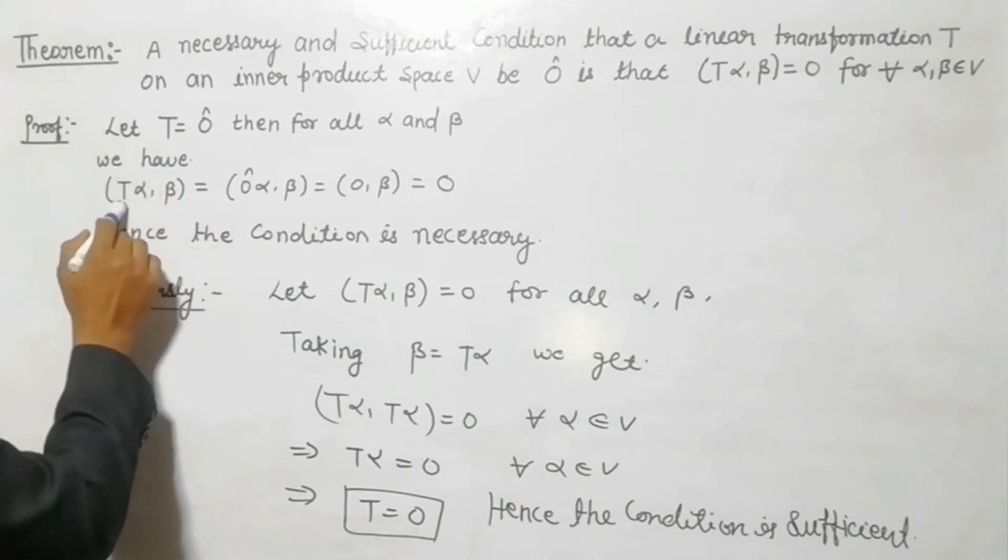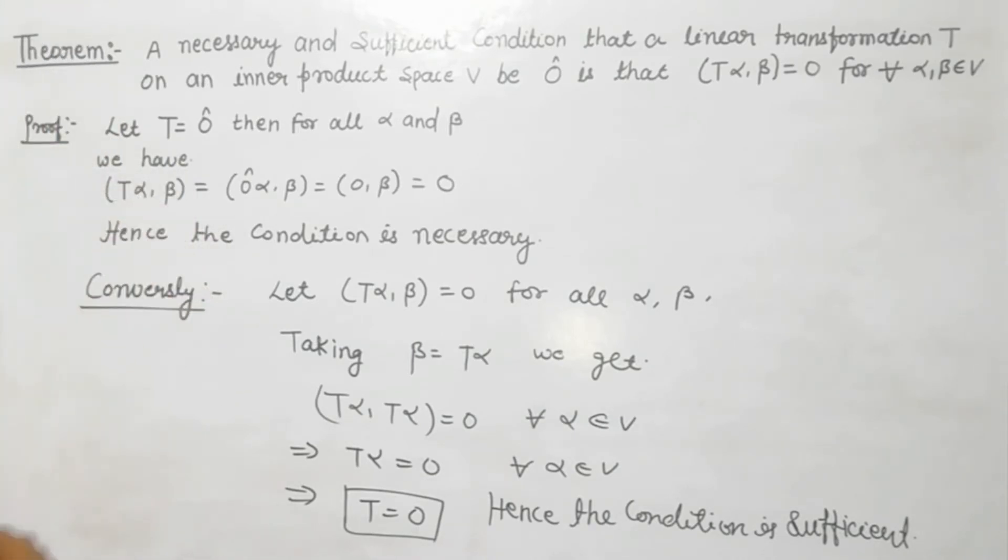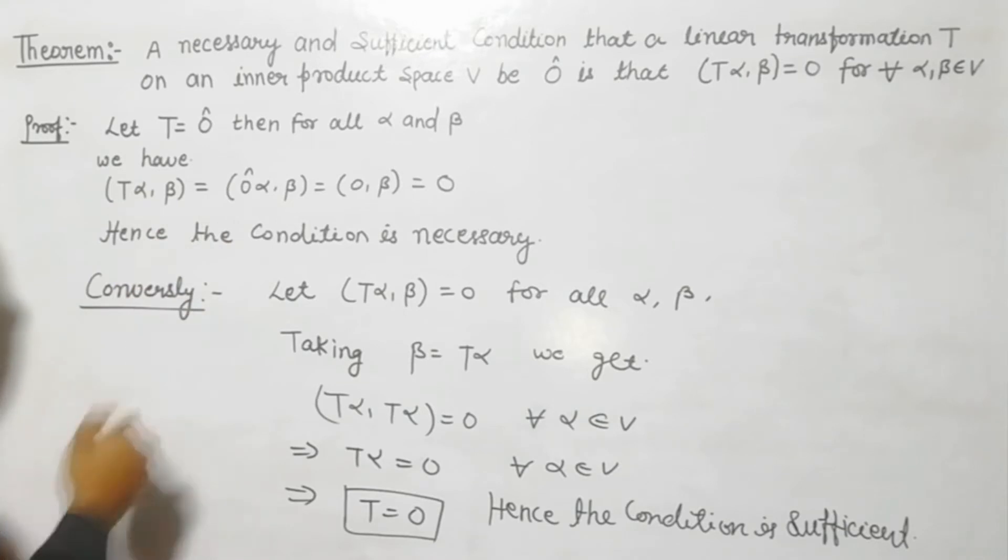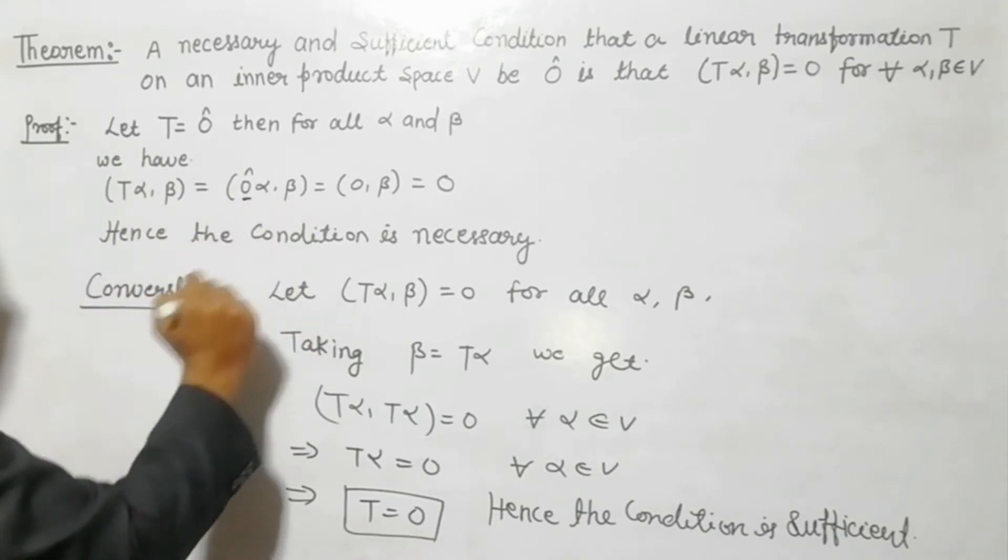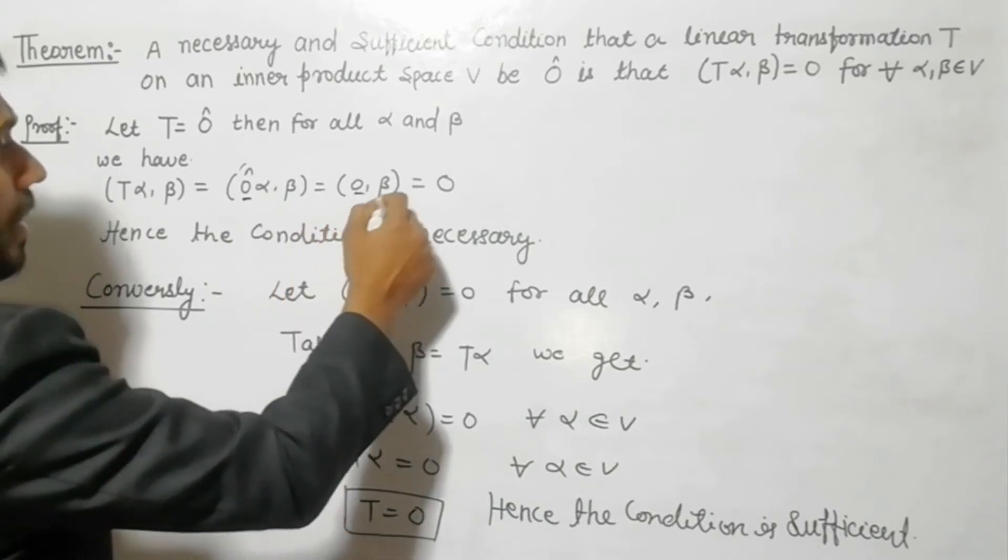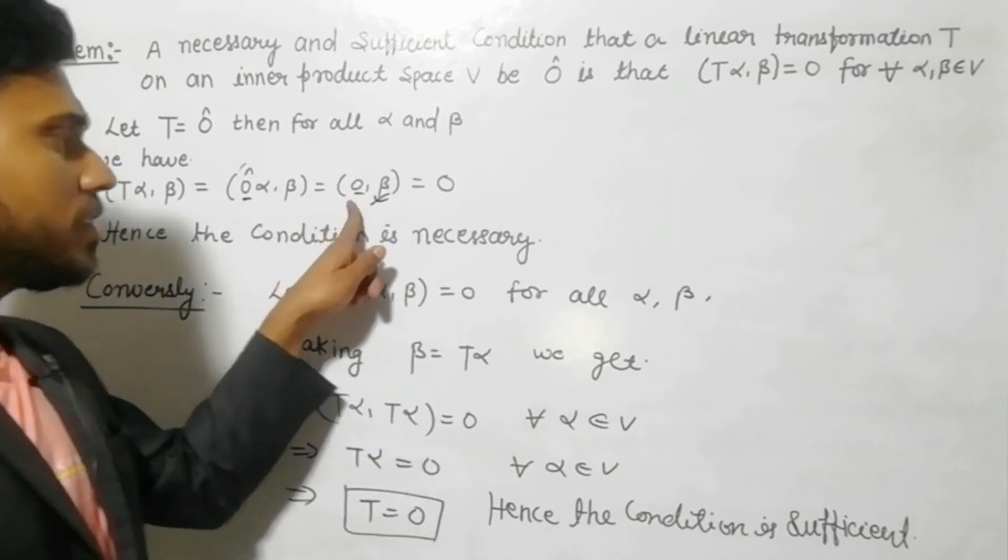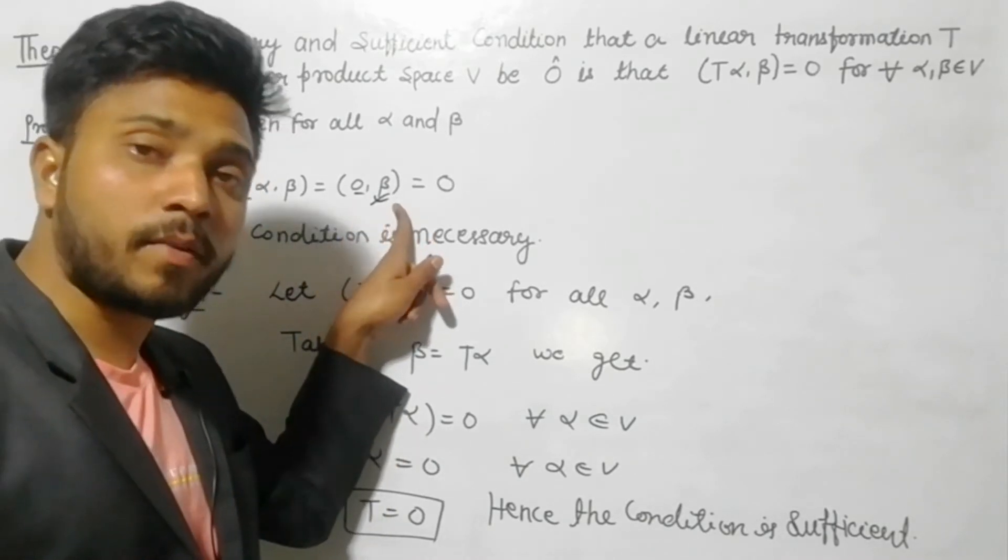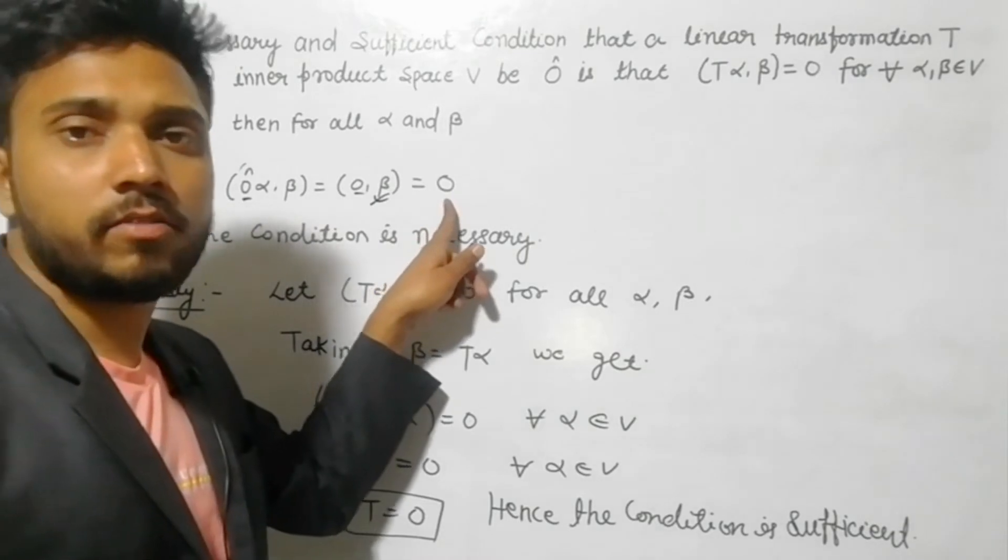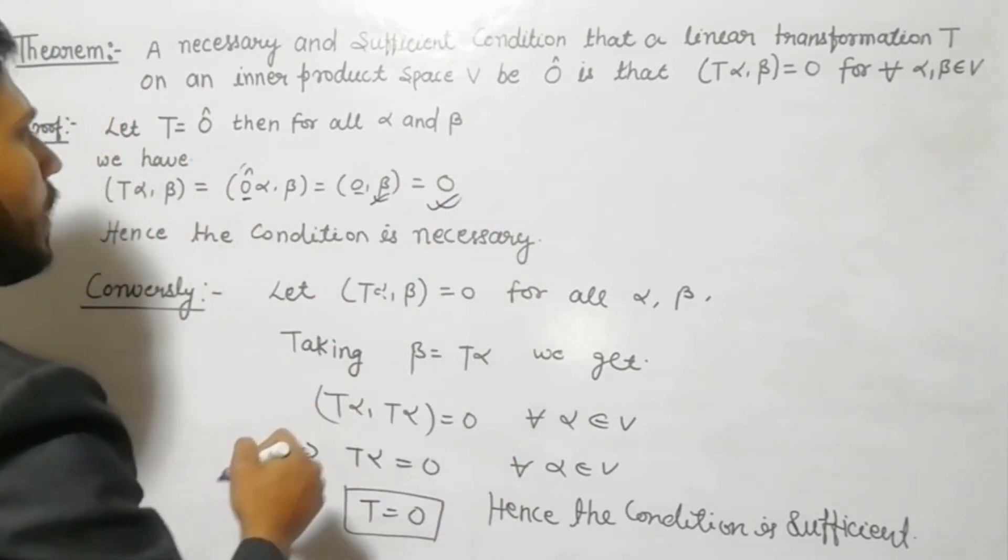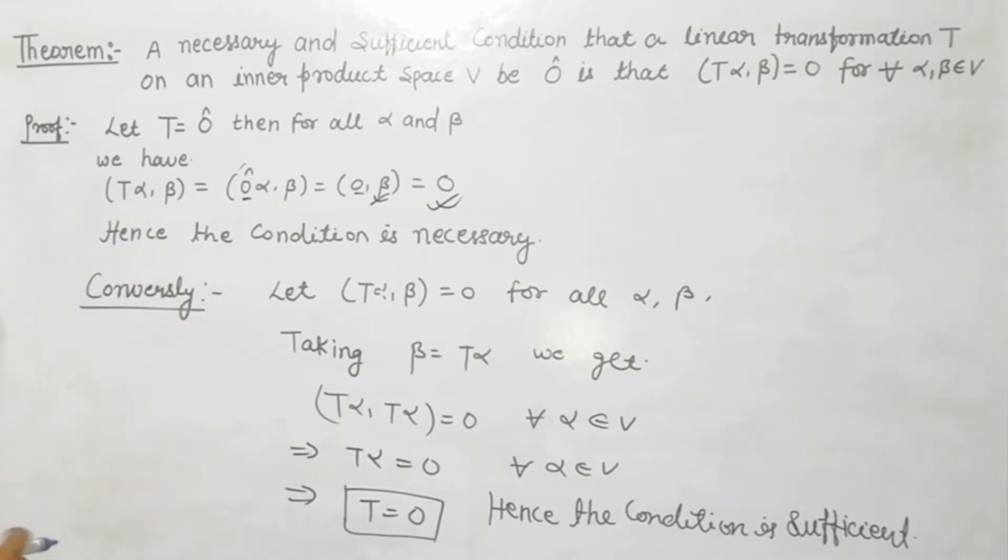We have (T(α), β) - the transformation T(α) inner product β equals - see, in place of T we have to put zero, so it becomes (0·α, β). When you multiply with zero, everything becomes zero. And guys, we already know that inner product of zero and α, when we take inner product of any vector with zero, it becomes zero.